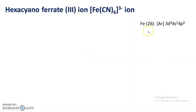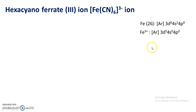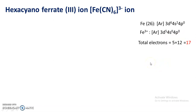The atomic number of iron is 26, and its electronic configuration is Ar 3d⁶ 4s² 4p⁰. In this complex, the oxidation state of iron is +3, so it is ferric iron, formed by the loss of 3 electrons. For Fe³⁺, the electronic configuration is Ar 3d⁵ 4s⁰ 4p⁰ — 5 electrons in the d orbital, with 4s and 4p orbitals vacant. 5 electrons are contributed by ferric iron and 12 electrons by the 6 cyanide ligands.